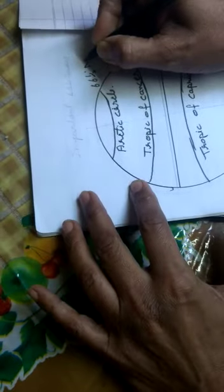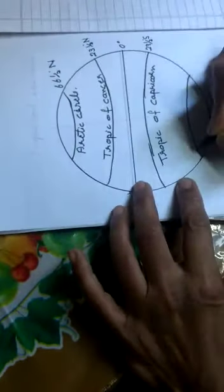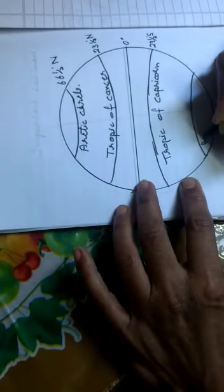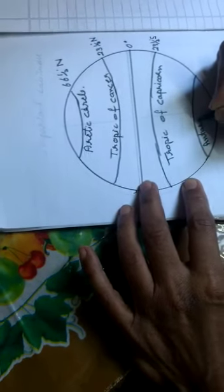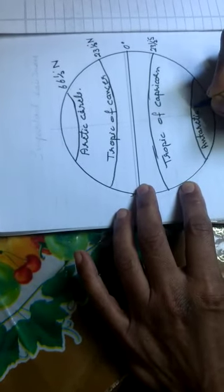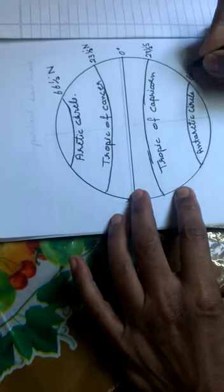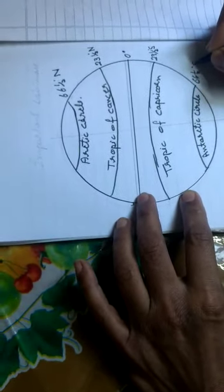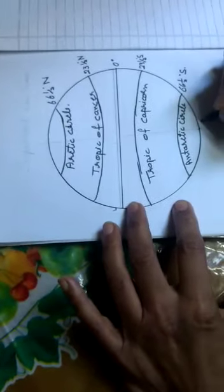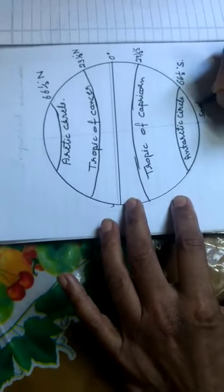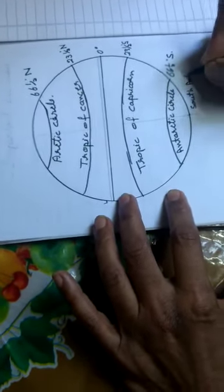And this is Antarctic Circle. It is 66 and half degree south. This is South Pole and this is North Pole.